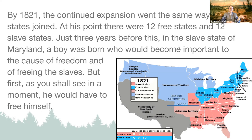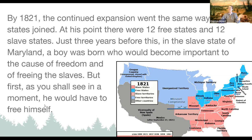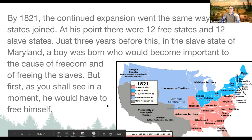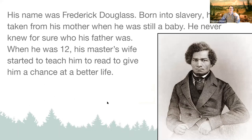Just three years before 1821, in the slave state of Maryland, a boy was born who would become important to the cause of freedom and freeing the slaves. He was important to the idea of all people being treated equally — he spoke up a lot about slavery and also defended other people he felt were treated unequally. Before he could become important to the cause, he would have to free himself. That boy is Frederick Douglass.